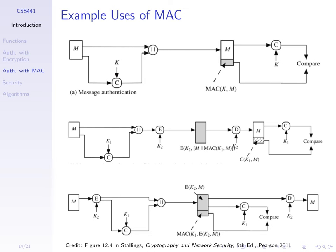So that's how we apply a MAC. If the tags don't match, something's gone wrong and we don't trust the message. We discard it and maybe take some action to inform the sender that the message that was just sent didn't validate.